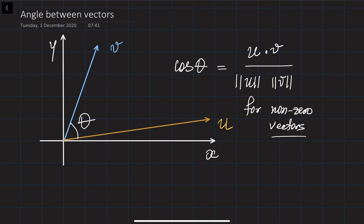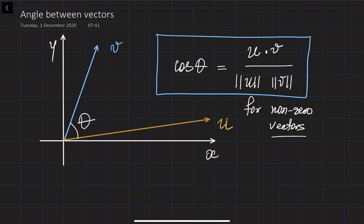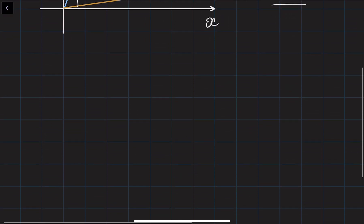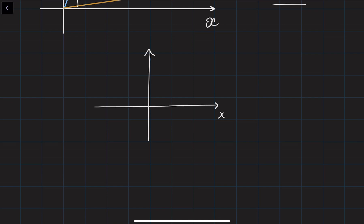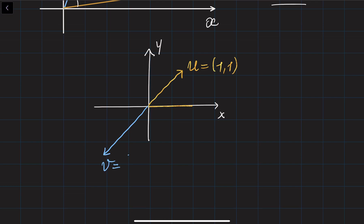First of all, we are going to do an example — how to find the angle between two vectors using this formula. So let's say we are given two vectors on the 2D rectangular coordinate system with x and y axes. Let's say vector u has components (1, 1), and vector v has components (-2, -2). I would like to find the angle between them.